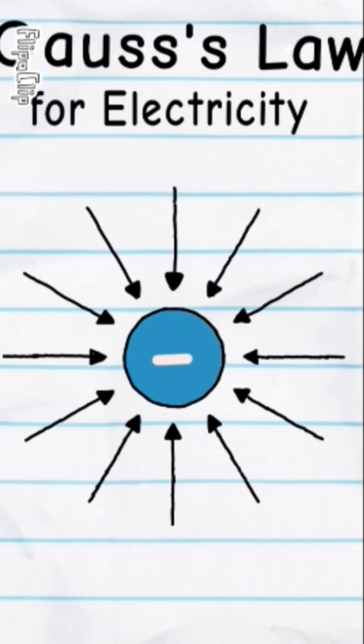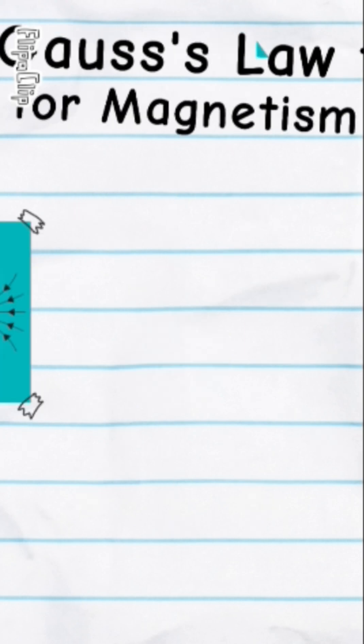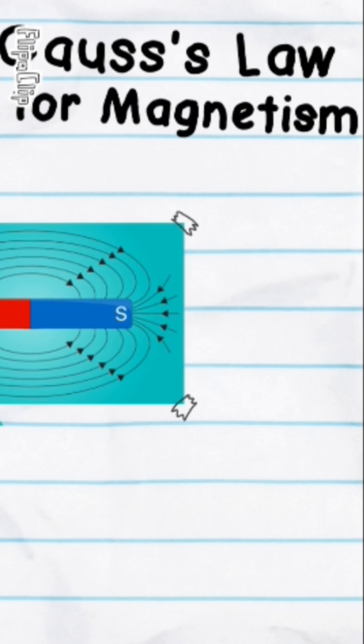First law: if you have an electric charge, the electric field will spread out from it. Positive charge, the field lines go out. Negative charge, field lines come in. Simple.